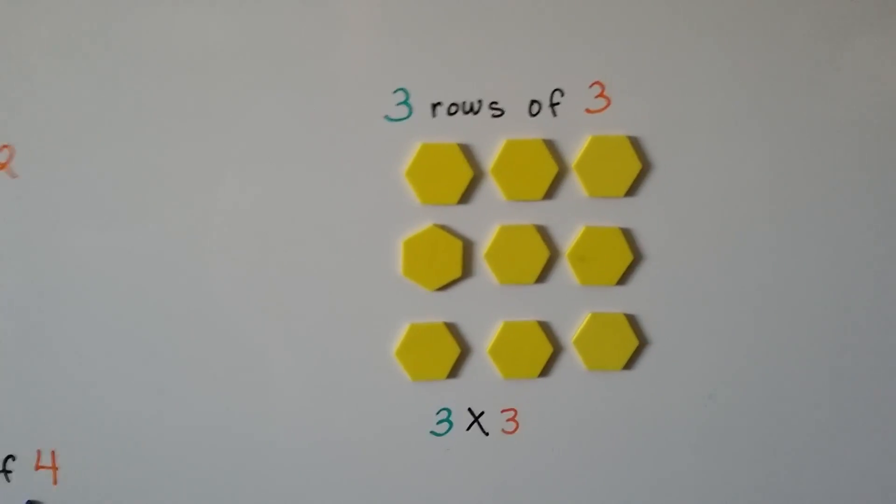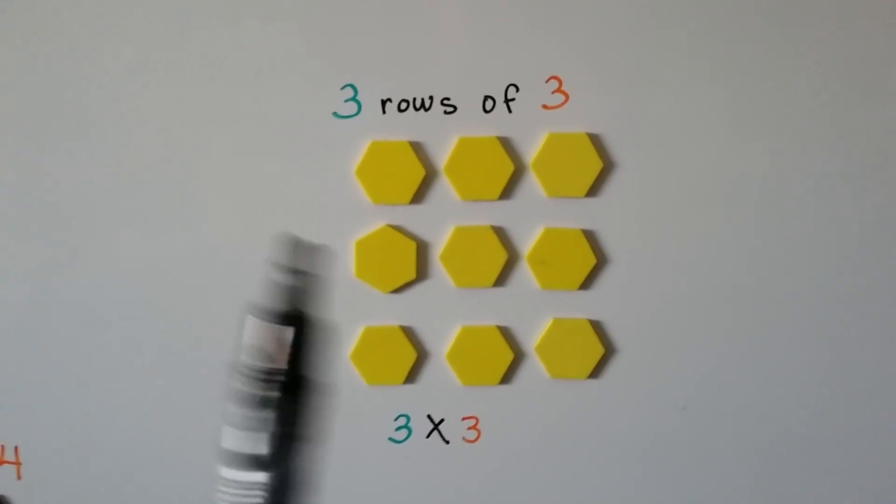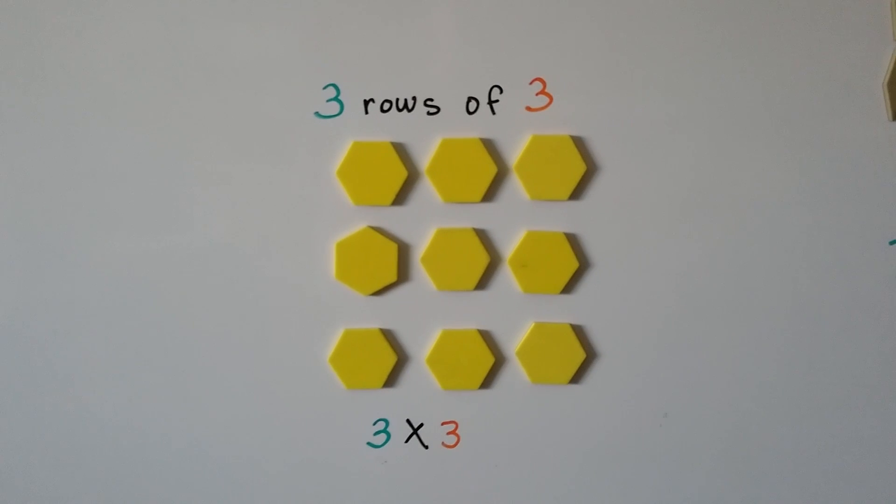Here we have 3 rows of 3. So we have 3 times 3. 1, 2, 3 rows, and 3 columns. 3 times 3.